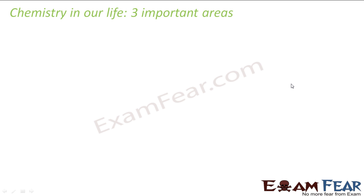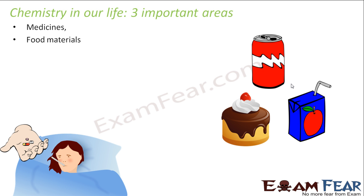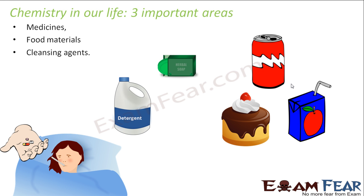With this, let's focus on the three important areas of chemistry in this chapter. The first is medicine — required when you fall ill. The second is food material. The third is cleansing agents — we'll discuss soaps and detergents. We will not focus on petrol, textiles, paper, or fruits in this chapter; we'll focus only on these three important areas where chemistry plays a vital role in our life.